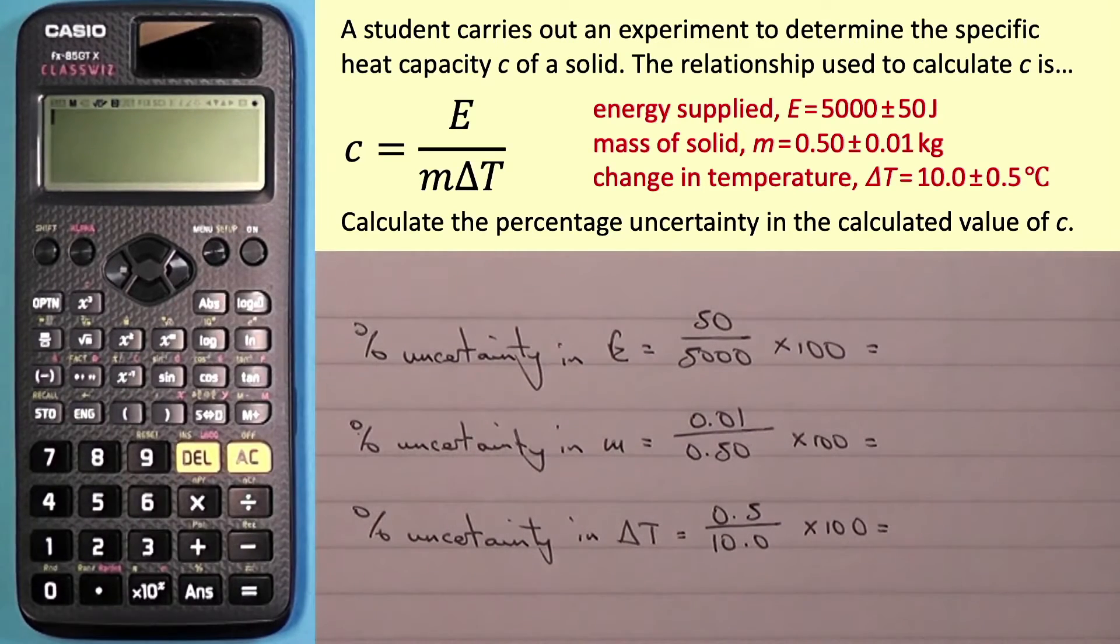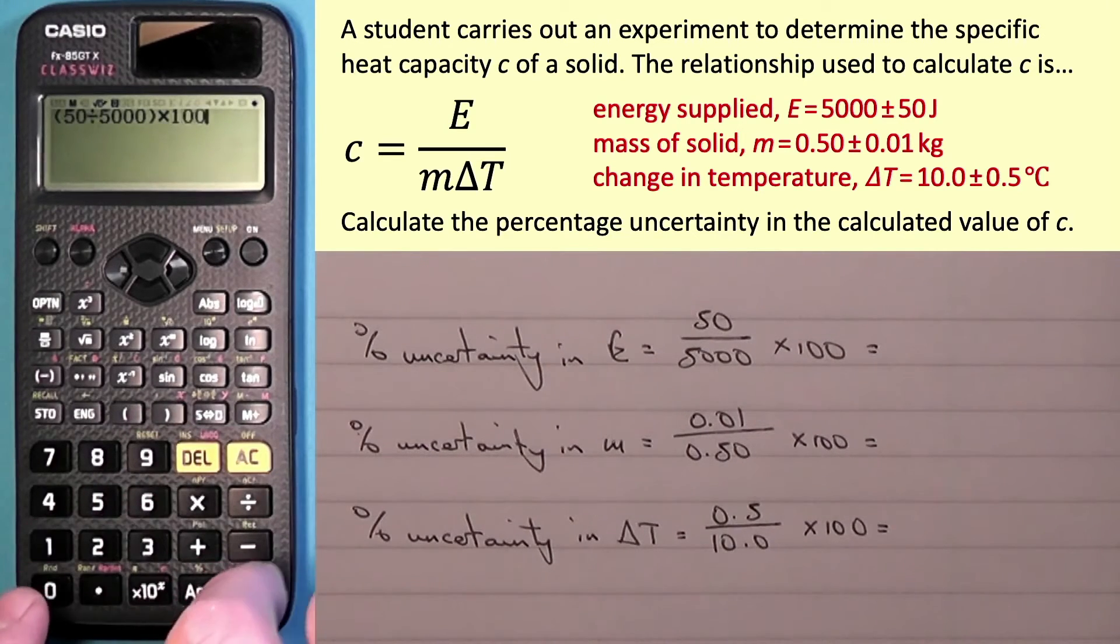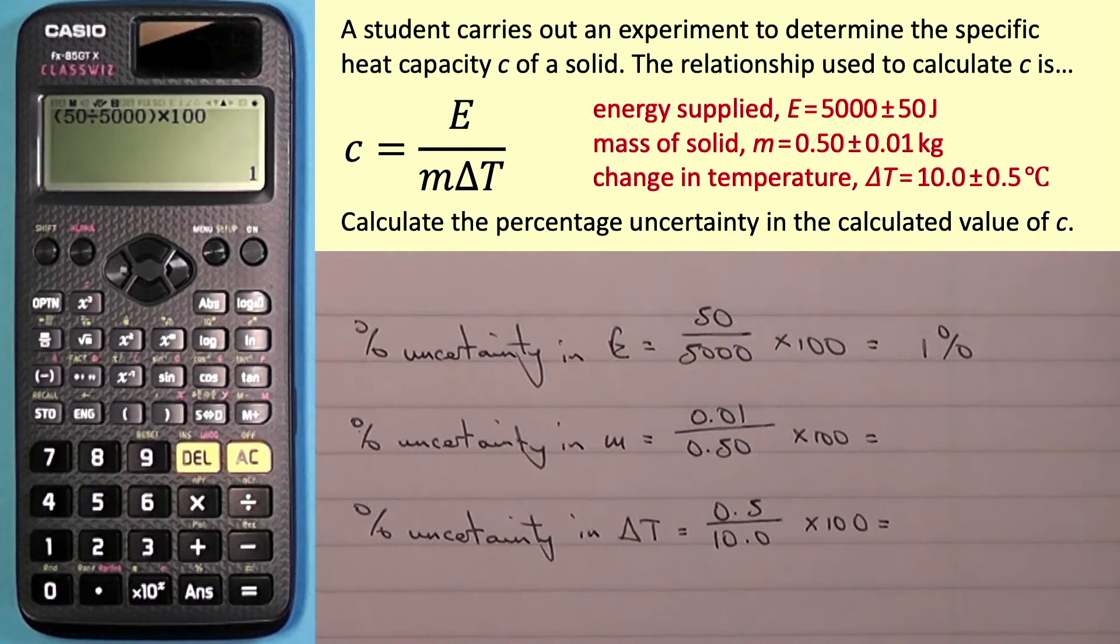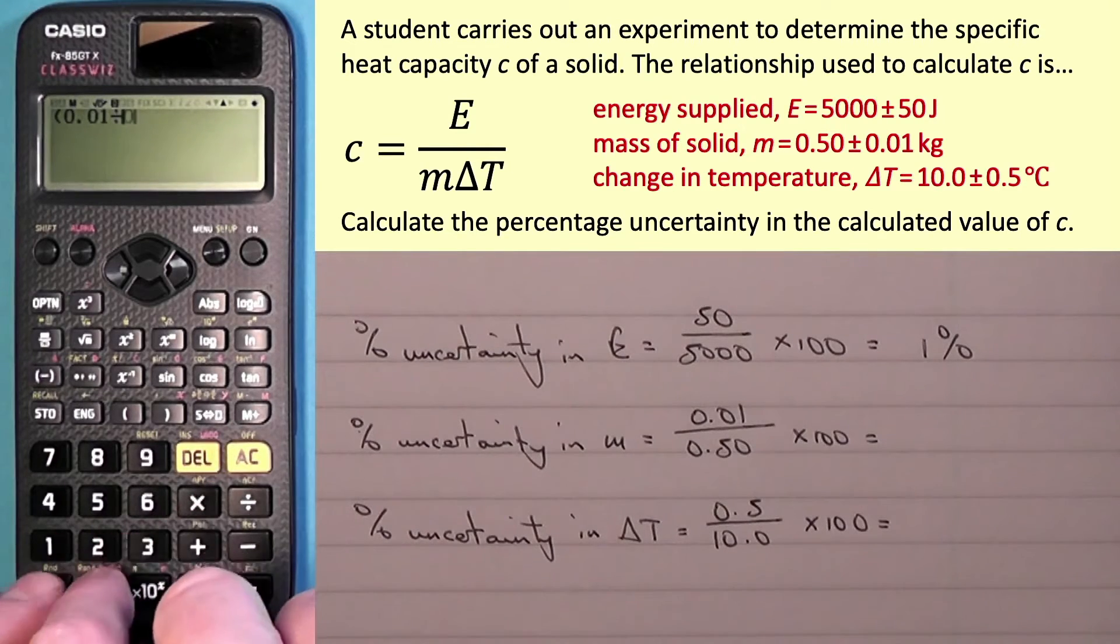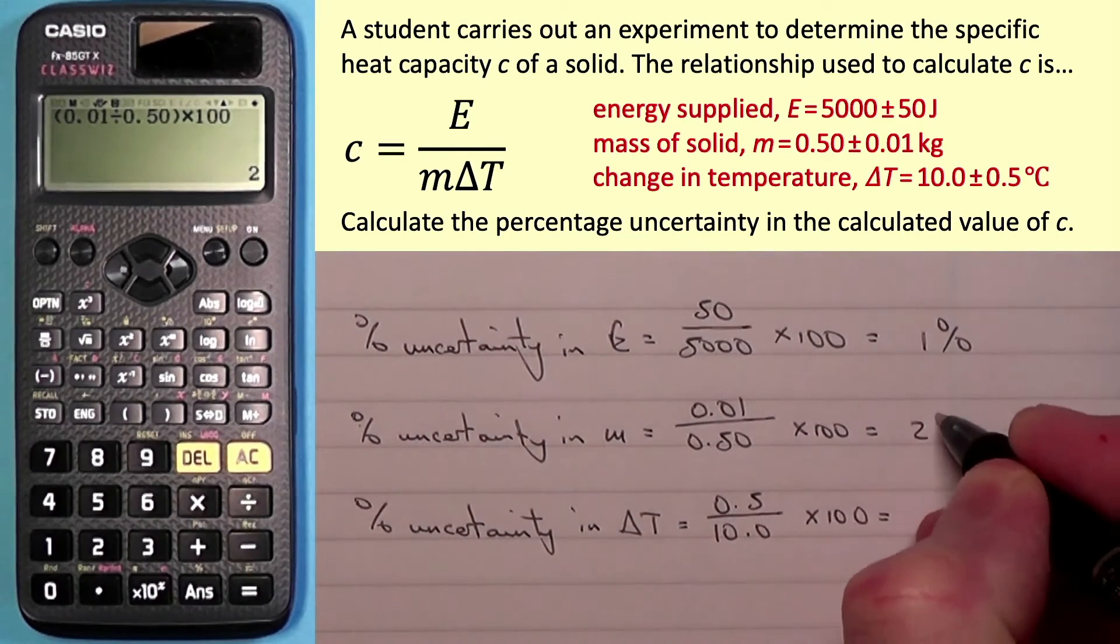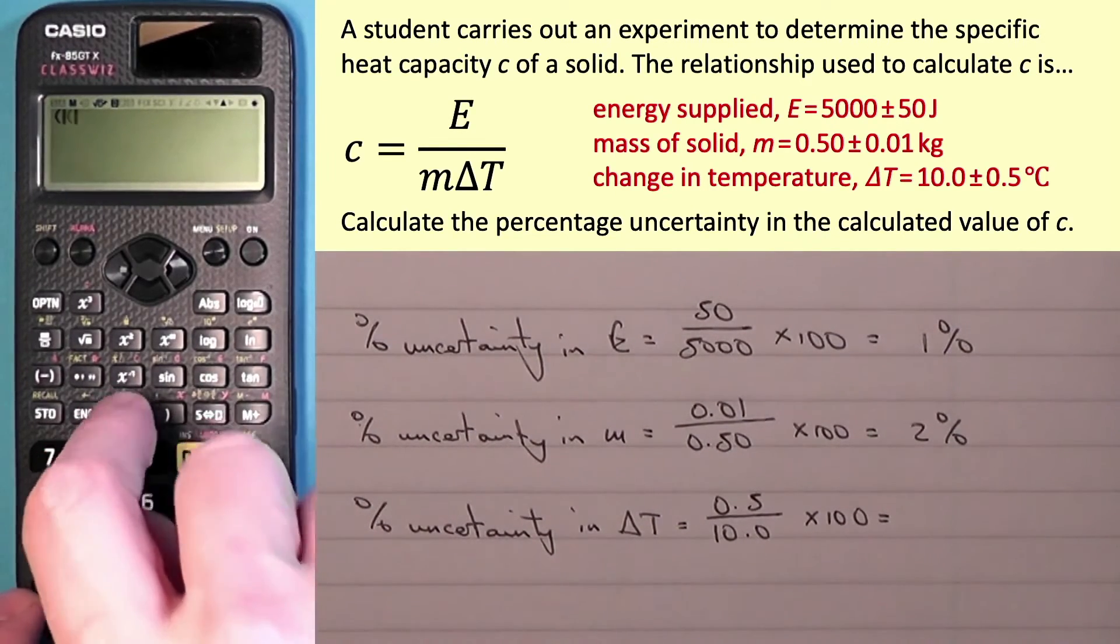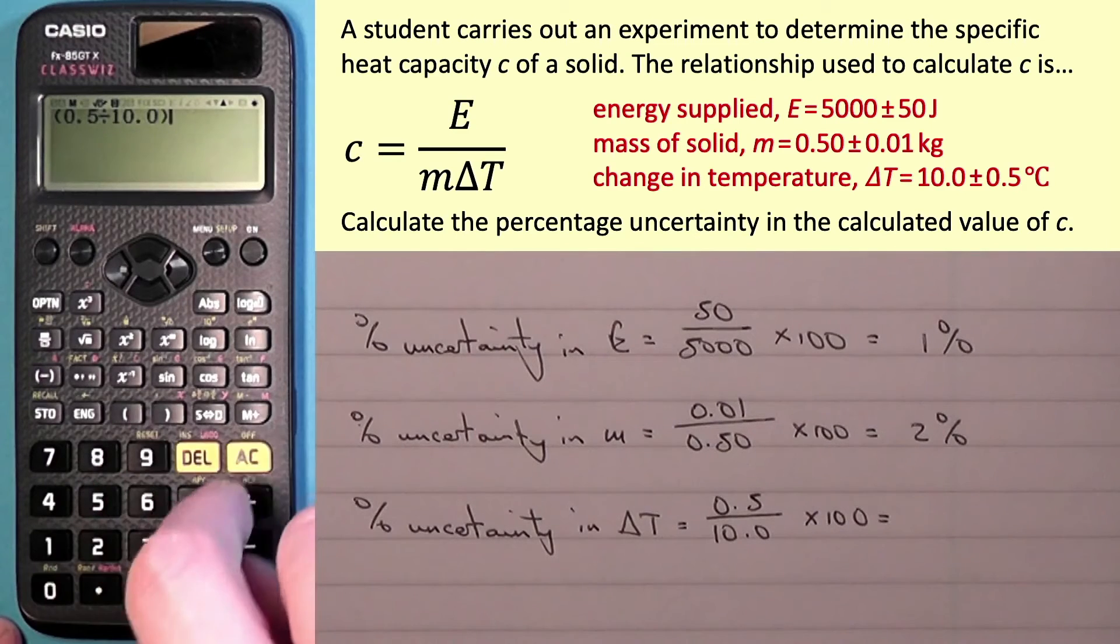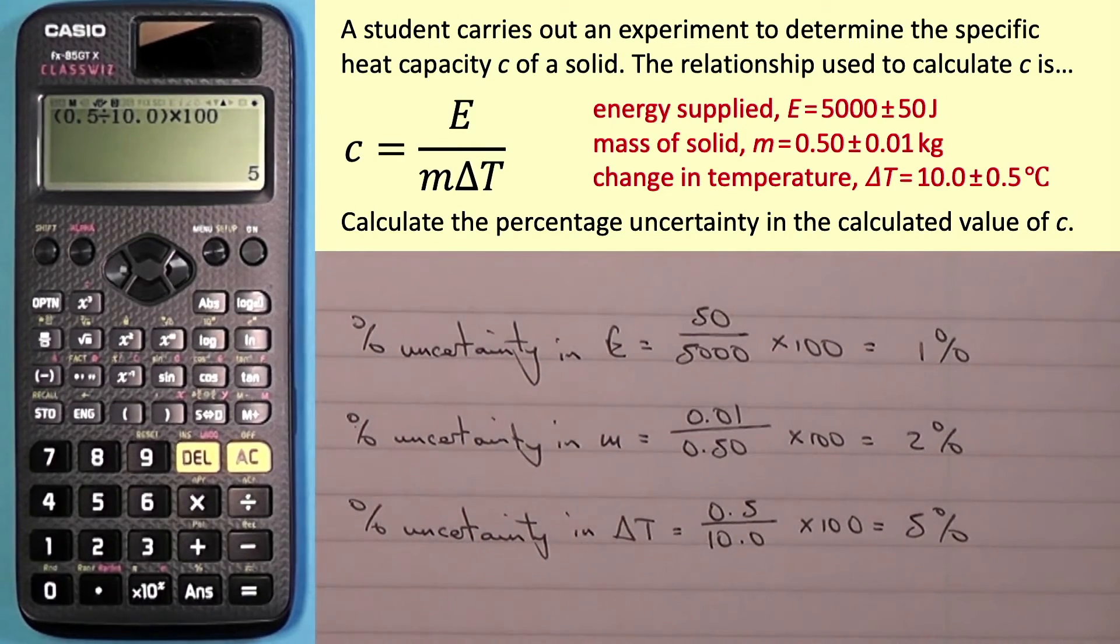So we'll calculate that. For energy we have 50 divided by 5000 times 100 gives us 1, so that's 1% which is the uncertainty in energy. For mass, 0.01 divided by 0.50 times 100 gives us 2%. And finally for change in temperature, 0.5 divided by 10.0 times 100 gives us 5%.